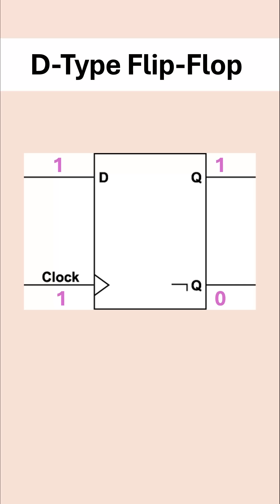And the bottom output is not-Q. Not really important, but it just does the opposite of what Q is. So this is a memory unit — if D stops being sent, it will retain its value. Q will just stay there until something changes.